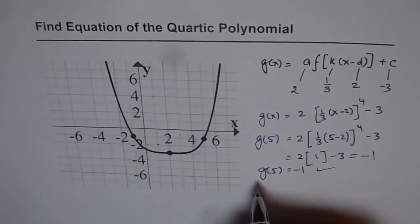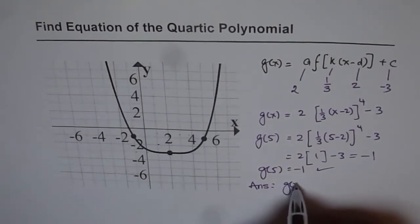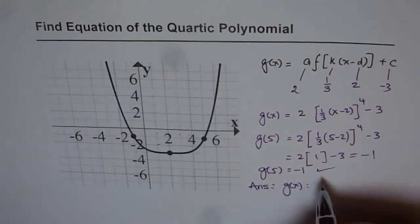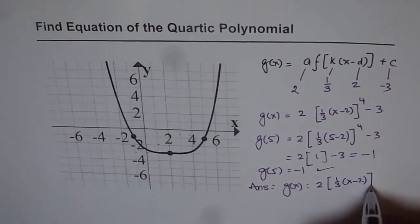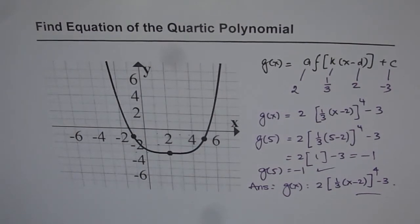And therefore, we are sure about our answer. Our answer is that the transformed function for this quartic polynomial is indeed 2 times 1 over 3, x minus 2 to the power of 4 minus 3. That is how you can quickly get the equation of the quartic polynomial. Thank you.